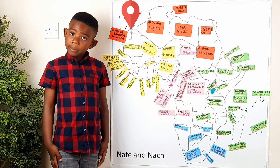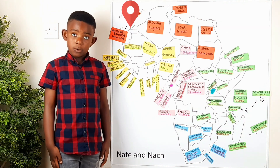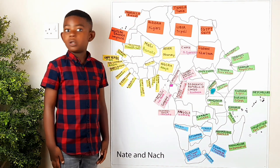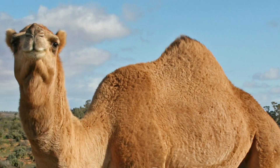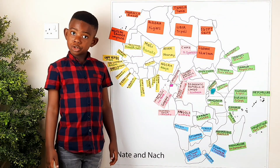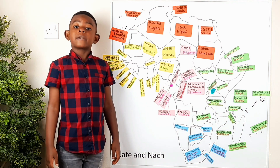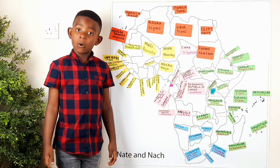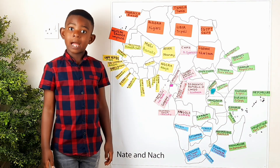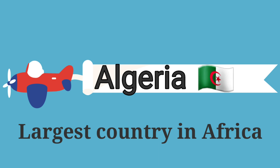The capital of Western Sahara is Laayoune. You would find lots of camels there. Next fun fact: the largest country in Africa is found in North Africa and it is called Algeria.